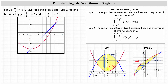Notice the region R is bounded above and below by two functions of x, and to the left and right by the vertical lines x equals a and x equals b. For type 2, the region lies between two horizontal lines and the graphs of two functions of y. The order of integration is first with respect to x, then with respect to y, given by dx dy. Because we integrate with respect to x first, the limits of integration for x must be functions of y, given by h1(y) and h2(y).